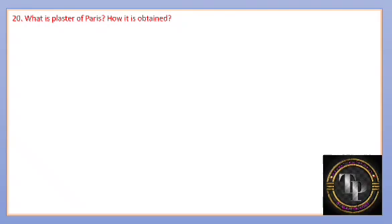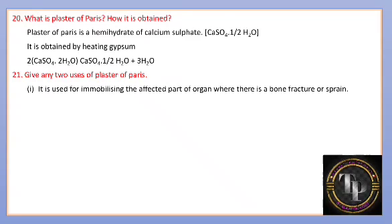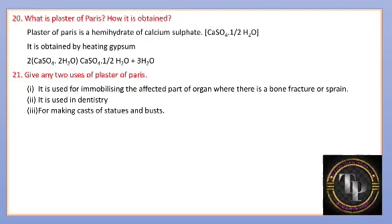What is plaster of Paris and how is it obtained? Calcium sulfate hemihydrate, CaSO4·½H2O, is known as plaster of Paris. It is obtained by heating gypsum, CaSO4·2H2O, which gives calcium sulfate hemihydrate. Uses of plaster of Paris: it is used in immobilizing the affected part when there is a bone fracture or sprain, and it is used in dentistry and for making casts of statues and busts.